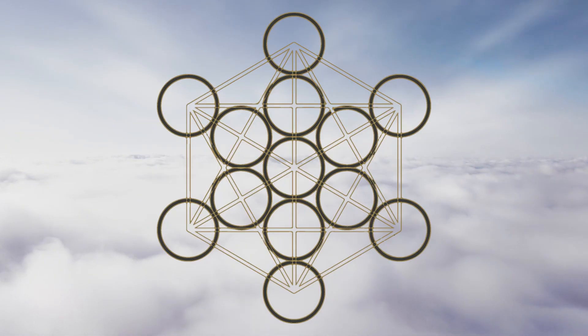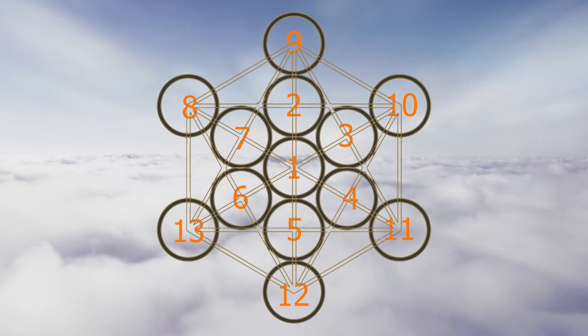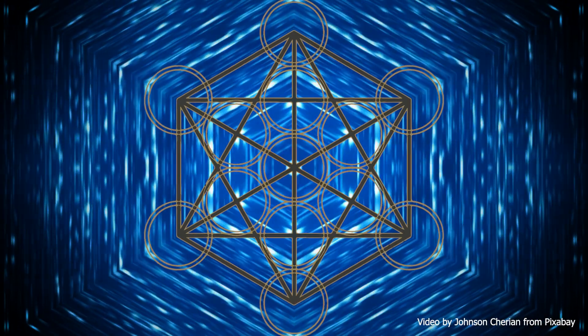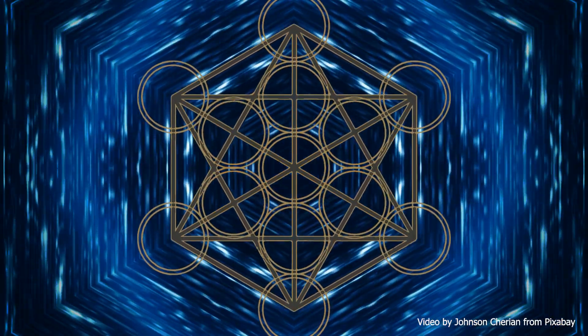The cube is formed by connecting 13 circles of the same size, which represent the 13 archangels, and straight lines between them form the five platonic solids, which are thought to represent the building blocks of life.